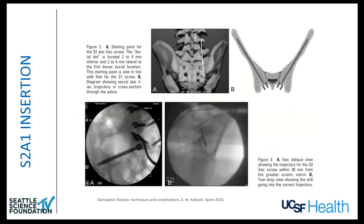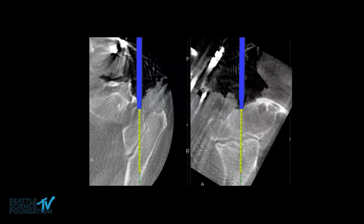Here's an example of where the start point would be in panel A, and the fluoroscopy imaging one would use. You can get great fixation with this technique, and the nice thing is it sits below the PSIS and iliac crest and is not painful for the patient, in contrast to iliac fixation. I personally use navigation, which makes this a chip shot — you drill it, tap it, and put the screw in. It's ideal to put the screws in under power because the amount of insertional torque is significant.